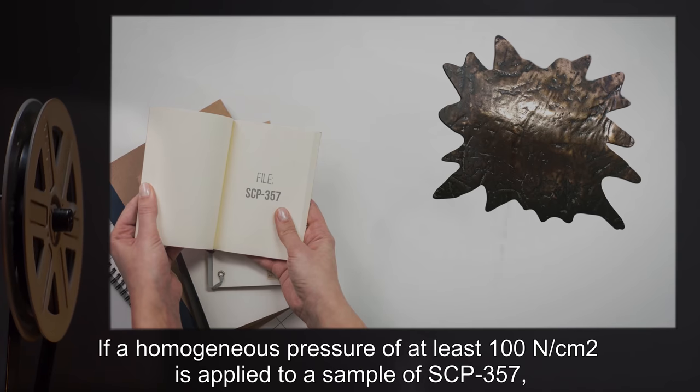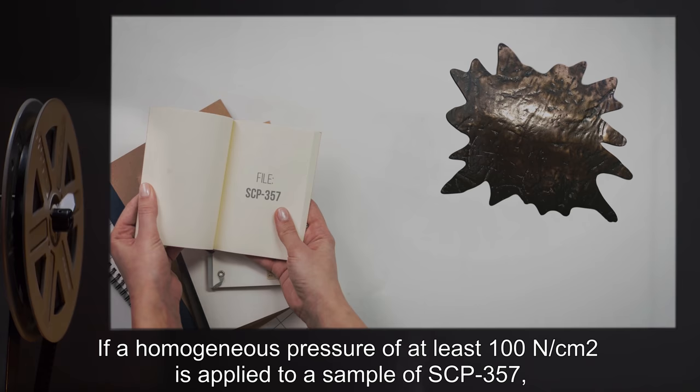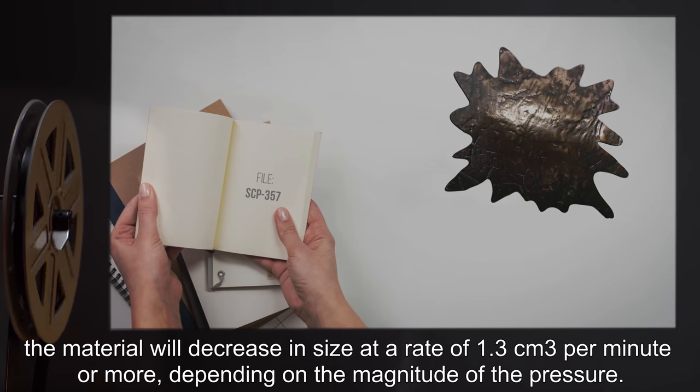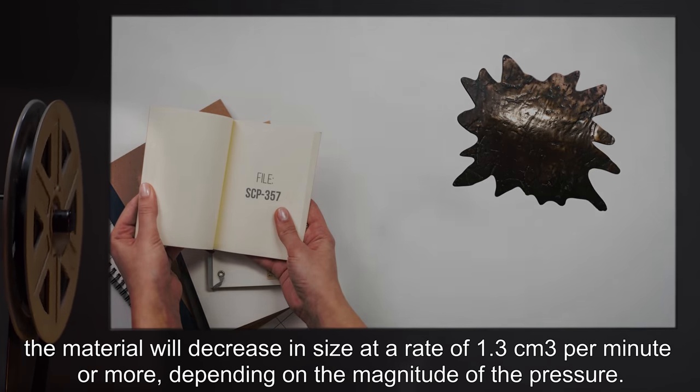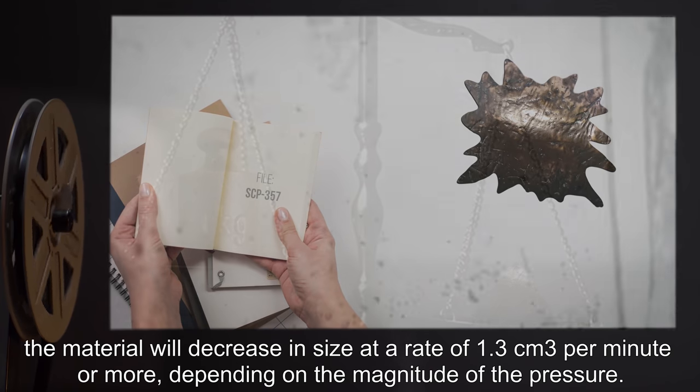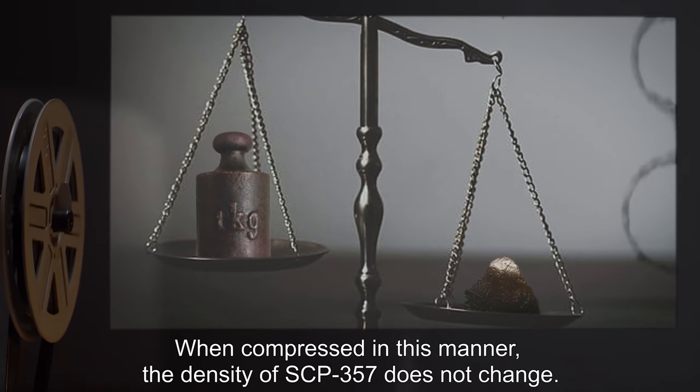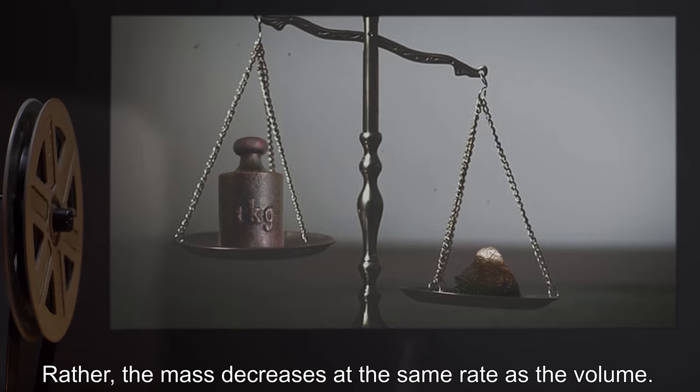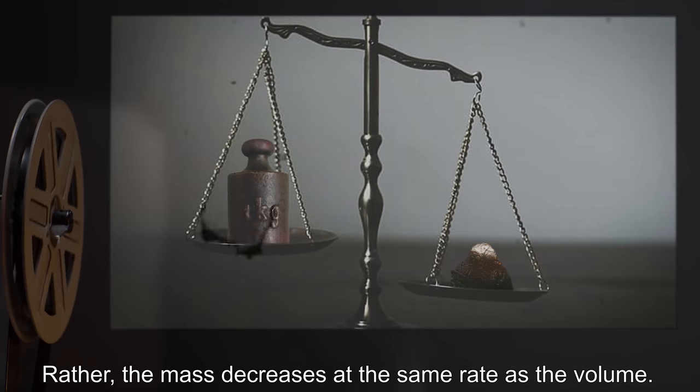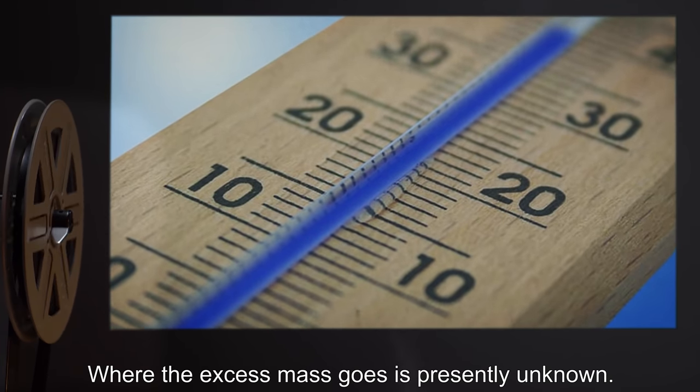If a homogenous pressure of at least 100 newtons per centimeter squared is applied to a sample of SCP-357, the material will decrease in size at a rate of 1.3 centimeters cubed per minute, or more, depending on the magnitude of the pressure. When compressed in this manner, the density of SCP-357 does not change. Rather, the mass decreases at the same rate as the volume. Where the excess mass goes is presently unknown.